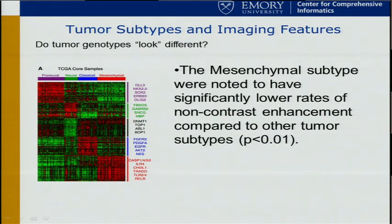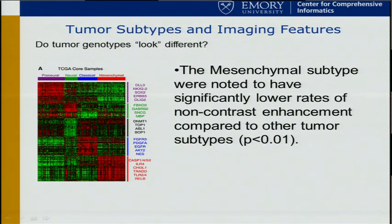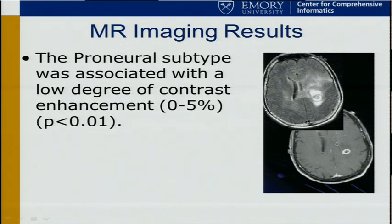This idea of molecular subtypes based on mRNA expression has been introduced multiple times. As we started doing more molecular analysis, we asked: if we have the proneural, neural, classical, and mesenchymal subtypes, are there certain imaging-derived features more common depending on your specific molecular genotype? The answer is that the mesenchymal type was noted to have significantly lower rates of non-contrast enhancement compared to other tumors. Similarly, the proneural subtype — which has a lot of interest due to survival differences — was noted to have a small degree of contrast enhancement.